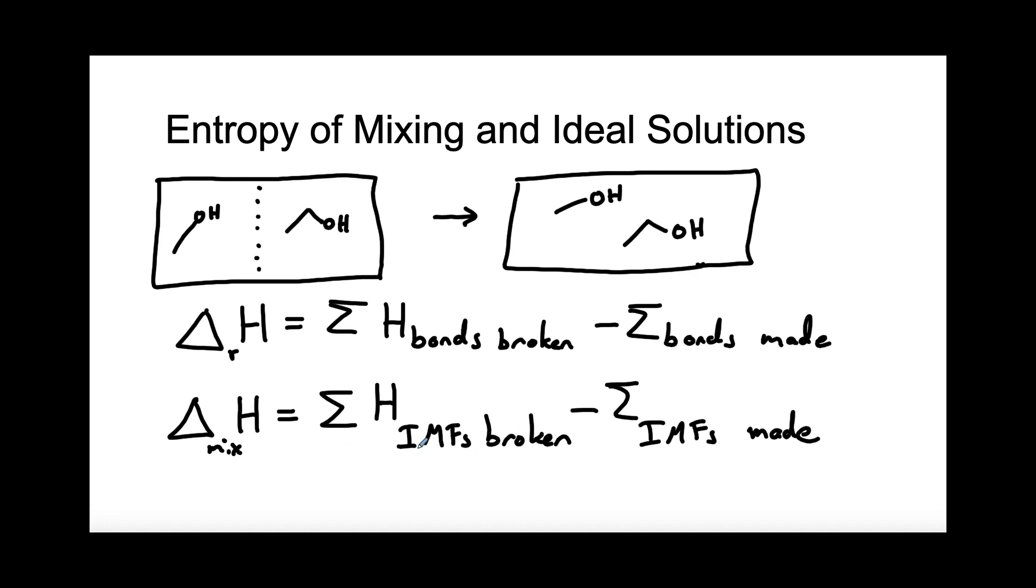So in this case, we are breaking some IMFs when we go from situation A to situation B, because some of the methanol molecules, instead of touching each other, are going to be touching ethanol molecules. So we're breaking some self-interactions and making some non-self interactions. And the question is, what is this going to come out to for this particular situation?